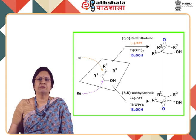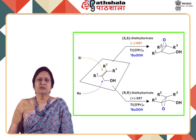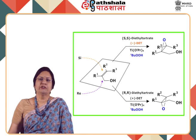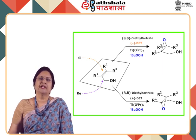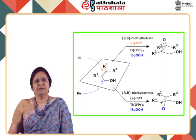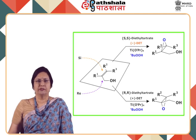As an application of this, starting with a simple allyl alcohol subjected to Sharpless epoxidation in the presence of (−)-diethyl tartrate, we get the epoxide above the plane. On the other hand, if we do this reaction in the presence of (+)-diethyl tartrate, we get the epoxide ring below the plane.